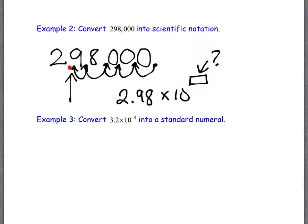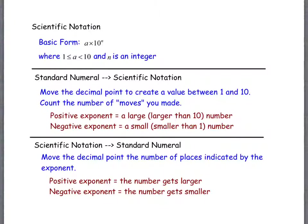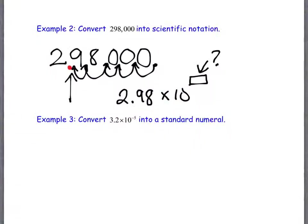The question is whether it's positive 5 or negative 5. My suggestion: if it's a large number, it should be a positive exponent; if it's a small number, it should be a negative exponent. That works whether you're going from standard to scientific or in reverse. Large number, positive exponent; small number, negative exponent. So for 298,000 — a large number — the exponent is positive 5. The answer is 2.98 times 10 to the 5th.